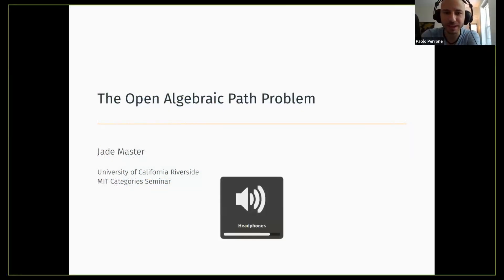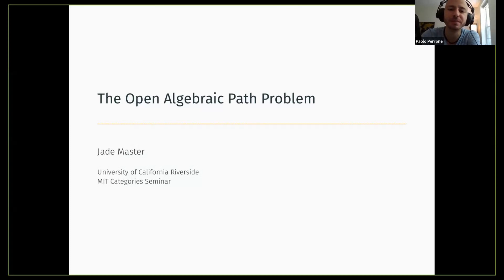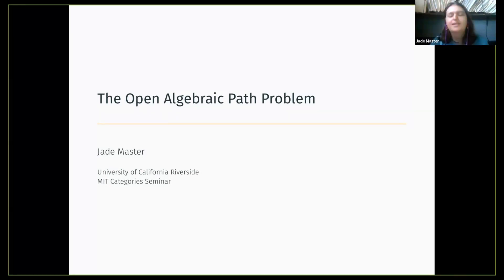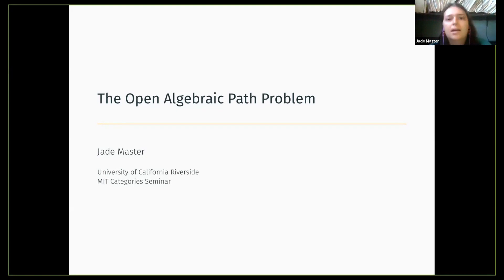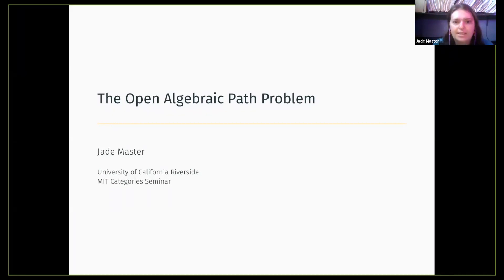Hello and welcome to the MIT Category Seminar. Today we have Jade Master from Riverside who's going to talk about the open algebraic path problem. I'm going to talk about the algebraic path problem, which is a generalization of the shortest path problem for many other contexts and optimization in computer science. In particular, I'm going to talk about ways to think about the algebraic path problem in contexts where networks are left open to their surroundings via boundaries.